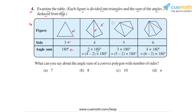Then we have this pentagon, and the pentagon has been divided into three triangular parts by drawing these two diagonals. The angle sum has been taken as 3 into 180 degrees because there are three triangular parts.